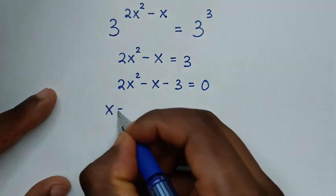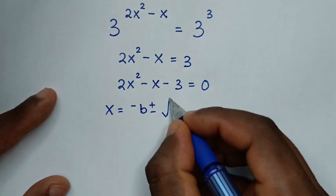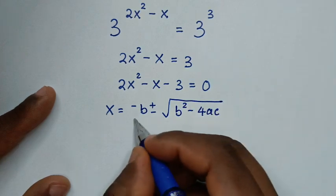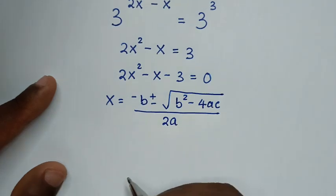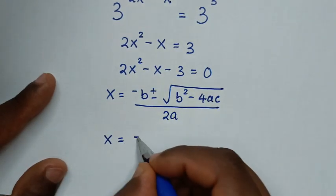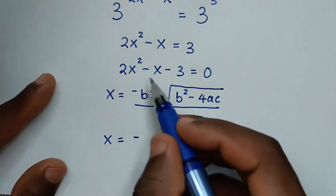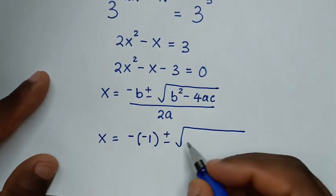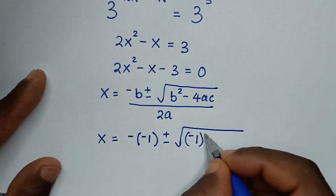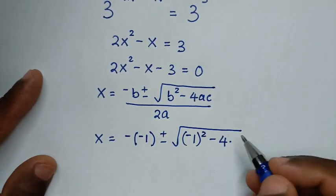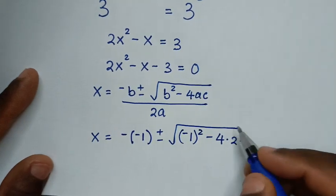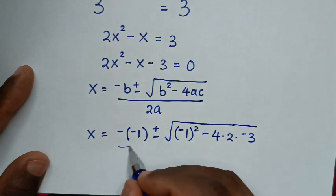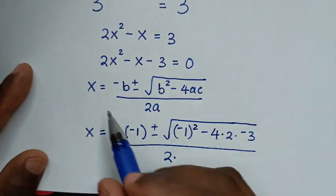We solve this quadratic equation using the quadratic formula: x equals negative b plus or minus square root of b squared minus 4ac, over 2a. Here b is the coefficient of x, which is negative 1, a is 2, and c is negative 3. So x equals negative of negative 1, plus or minus square root of negative 1 squared minus 4 times 2 times negative 3, over 2 times 2.